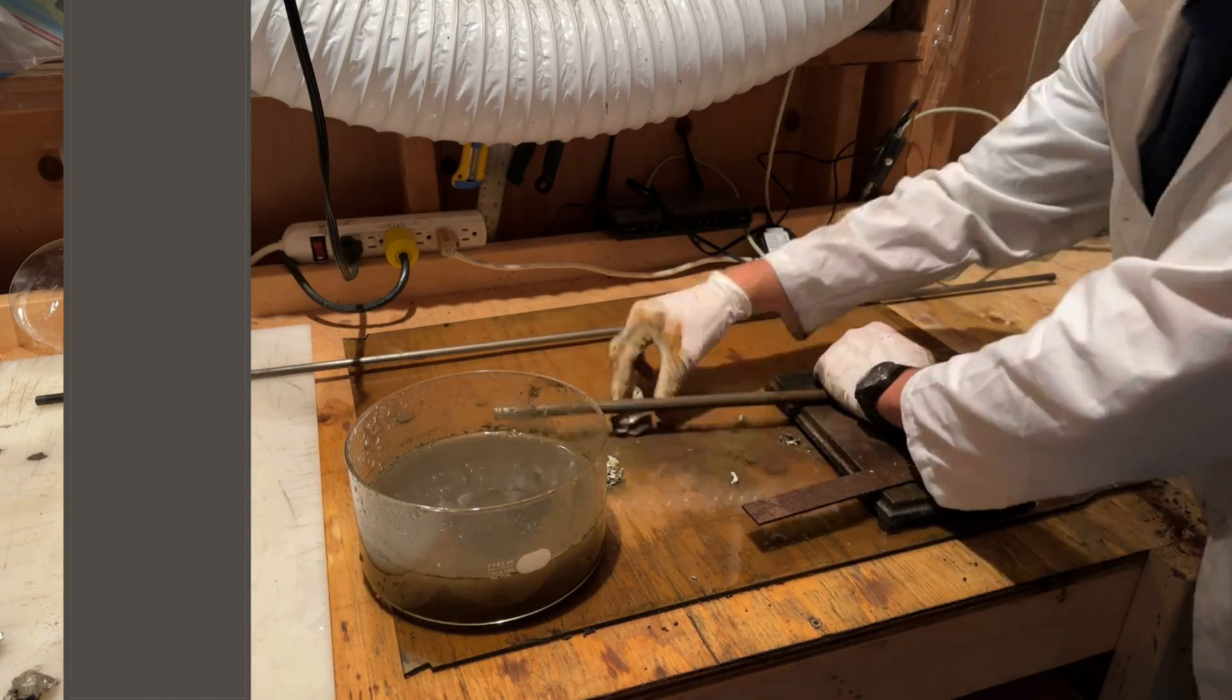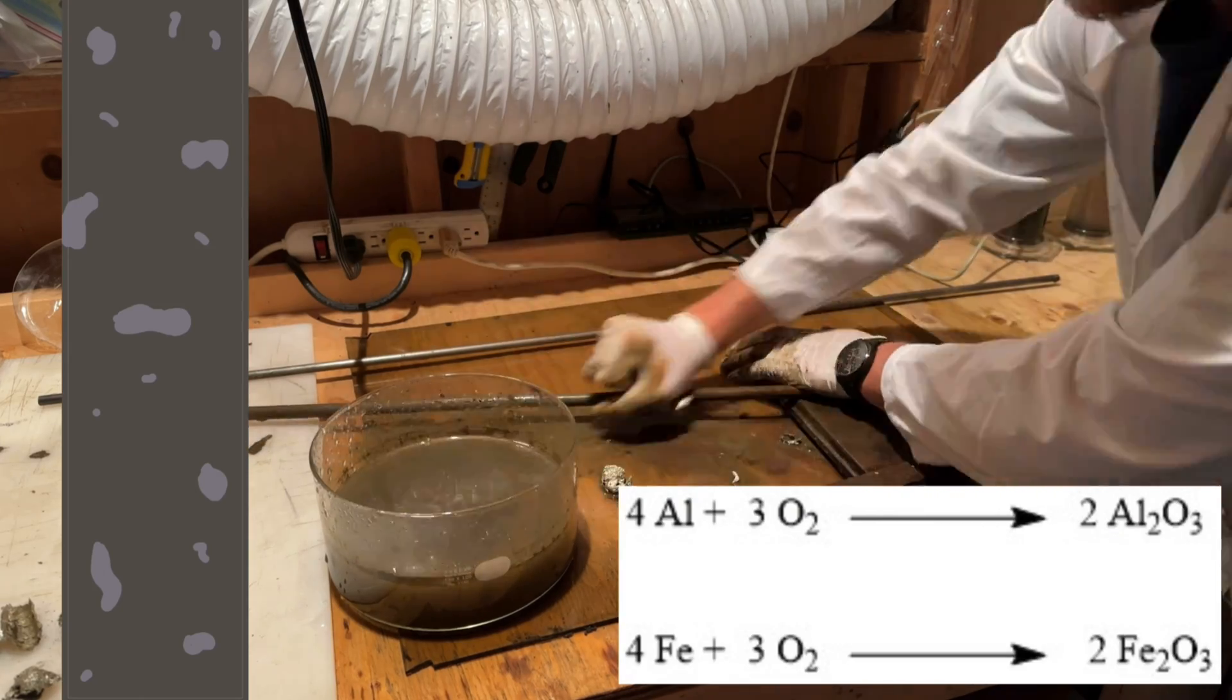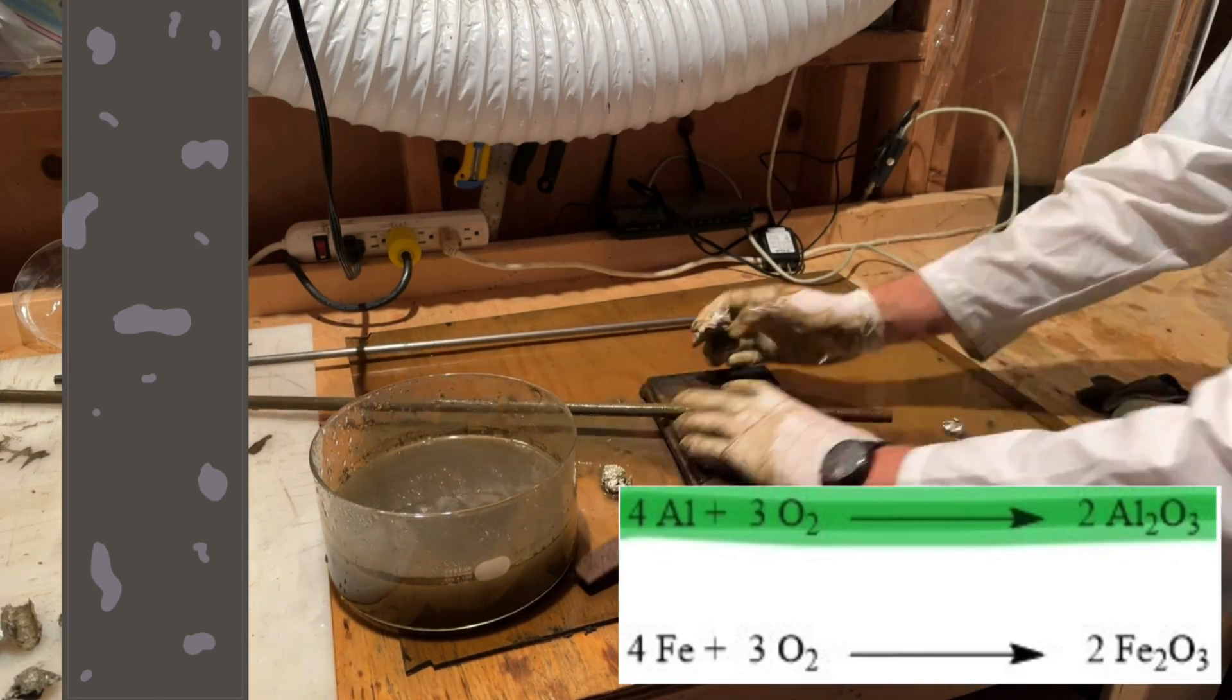Small flakes of aluminum will also become stuck amongst the iron which will help prevent further corrosion down the road. This is because the aluminum will preferentially oxidize over the iron.